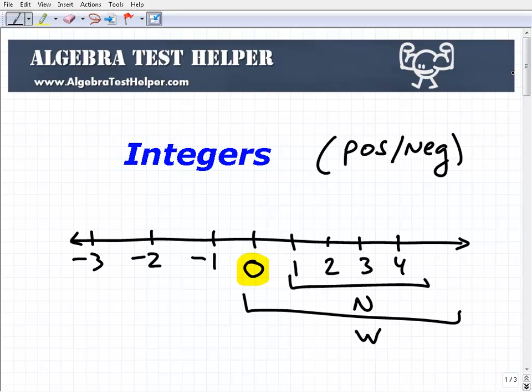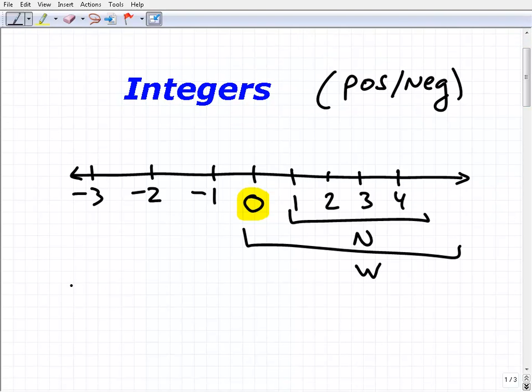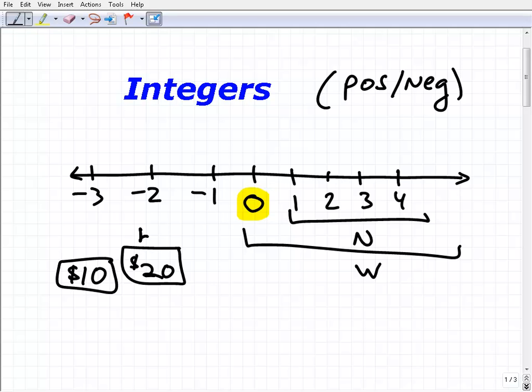These negative numbers actually mean something to us. Here's a quick example: let's say I had $10 and I got a bill in the mail that was $20. I only have $10, so now if I pay my bill, how much money do I have? Well, really, you have less than zero dollars—you have negative ten dollars.